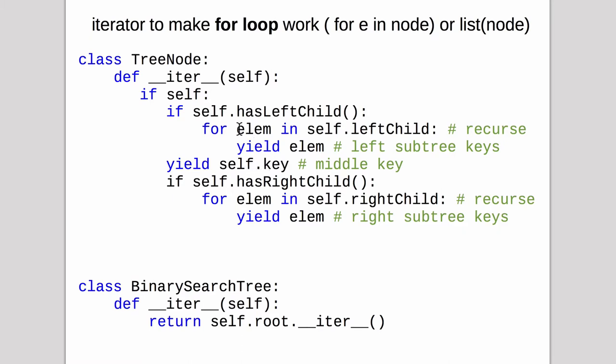So each key it returns is set to element. And then this yield will yield the element of all the ones in the subtree. Then when it gets the node that originally was called on it yields that key.